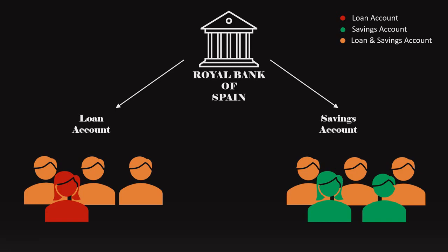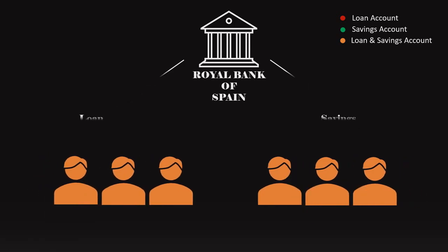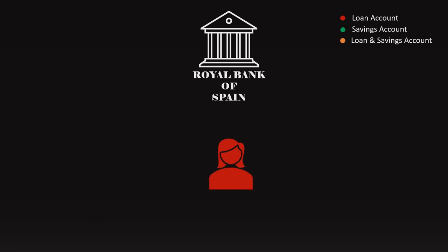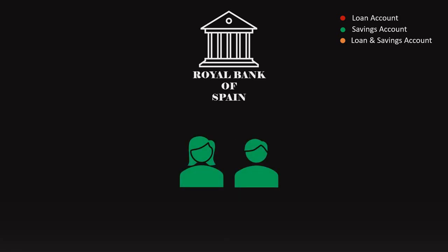If the branch manager wants to check customers who have both a loan and a saving account, he would use inner join. If he wants to find customers who have taken a loan but don't have a saving account, he would use left join. And if he wants to find customers who have only saving accounts, he can use right join. So joins can resolve various queries from data present in different sheets or different connections, and we must know each type.